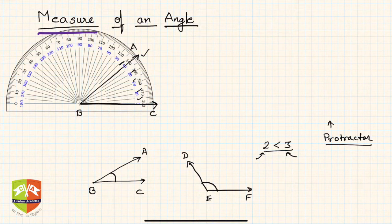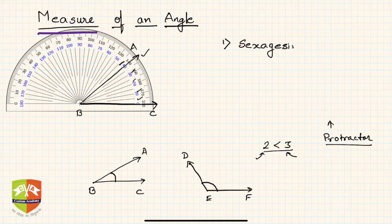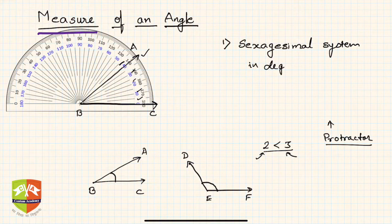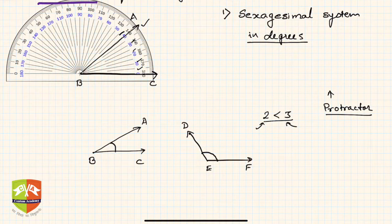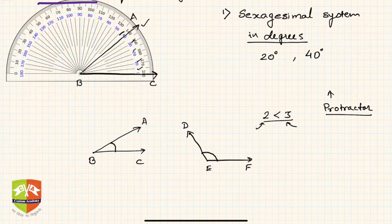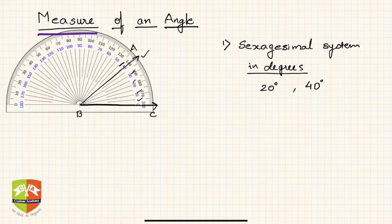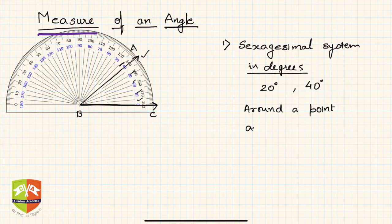The unit here is degrees. This first system is called the sexagesimal system, where we measure angles in terms of degrees. So we say 20 degrees, or in this case 40 degrees, written with a small dot on the upper right. In the sexagesimal system, around a point the angle measure is 360 degrees.